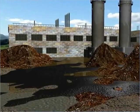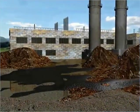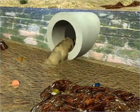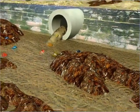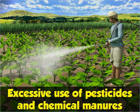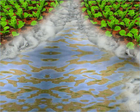Industrial waste materials are discharged untreated into nearby water bodies, thereby leading to water pollution. Excessive use of pesticides and chemical manures in agricultural fields also causes water pollution. These can run off into water bodies during the rainy season, thereby contaminating water.